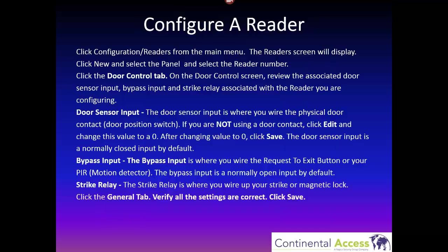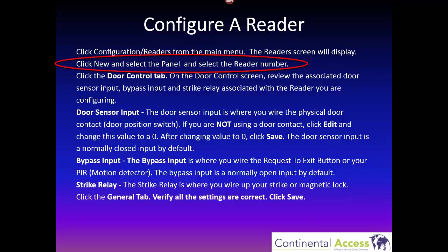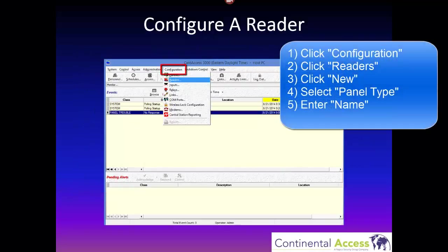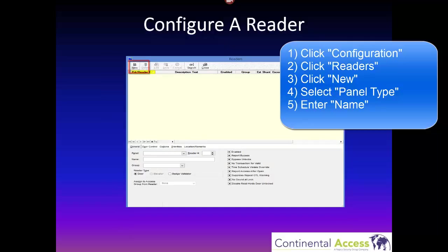Next, configure a reader. Click Configuration then Readers from the main menu. The reader screen will display. Click New and select the panel and the reader number. Click the Door Control tab. You have a door sensor input (the door contact), a bypass input (normally a request-to-exit button or a PIR motion detector), and your strike relay number. On this screen, click New, enter a name in the bottom half of the screen, and assign a group.